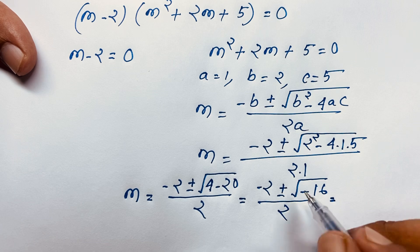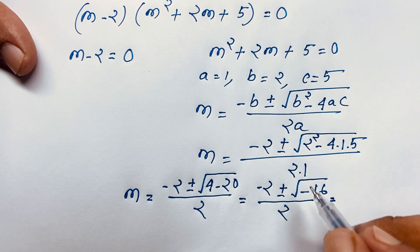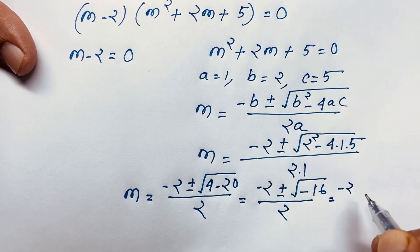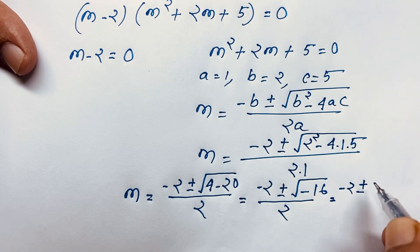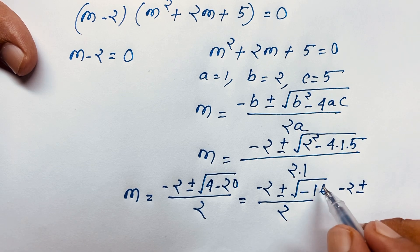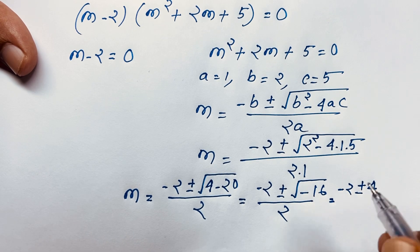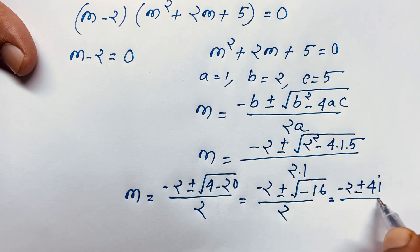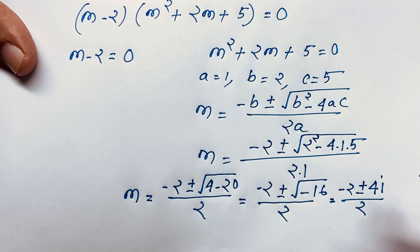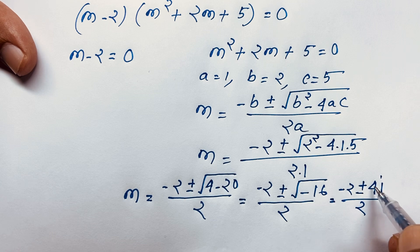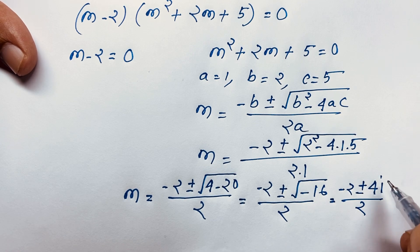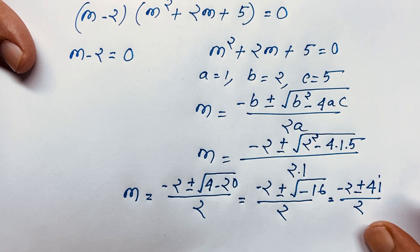Evaluating: square root of negative 16 equals 4i, since square root of 16 is 4 and square root of negative 1 is i. We find a complex number — a complex solution.